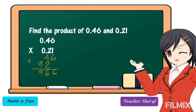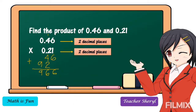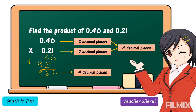Next, we're going to count the decimal places in our factors. For our multiplicand, we have two decimal places. For our multiplier, we have also two decimal places. Therefore, we have four decimal places in our factors. So we're going to affix four decimal places in our product. Let's count from right to left: one, two, three, four — then the decimal point. We can put zero as the placeholder for the whole number since we don't have a digit there. Therefore, our answer is 0.0966.